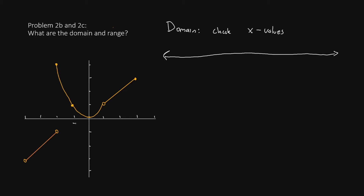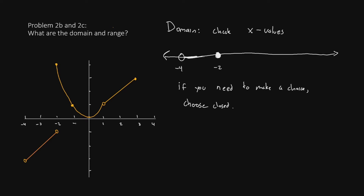Let's look at the x values. We have negative 1, negative 2, negative 3, and negative 4, and the positive ones as well. This function begins at negative 4 with an open circle. The function continues from negative 4 to negative 2 — remember, we're only looking at x values. At negative 2, we have another open circle, but also at negative 2, we have a closed circle. If you have to make a choice, we are going to choose the closed circle, so the closed will take priority.